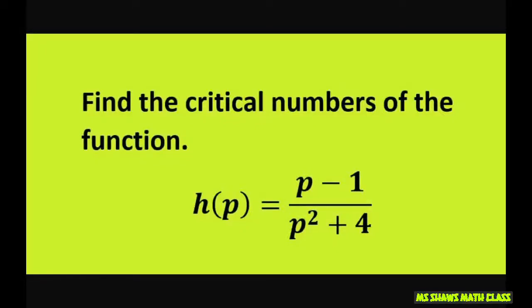Hi everyone. We're going to find the critical numbers of the function h of p, which equals p minus 1 divided by p squared plus 4.